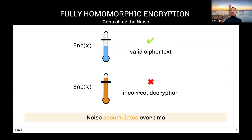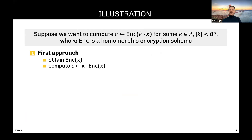If you want to implement FHE, one of the main challenges is noise. All the constructions we know for homomorphic encryption produce noisy ciphertexts. When you work over encrypted data, the noise tends to increase. If the noise exceeds a given threshold, it might be the case that the ciphertext can no longer be decrypted. What I'd like to do in this talk is to find a way to better control the noise. As an example, assume you have some private data x and you'd like to compute k times x.